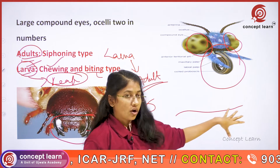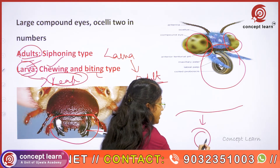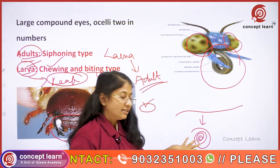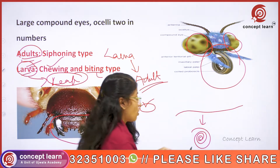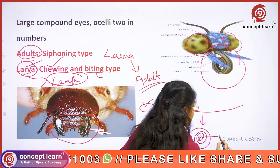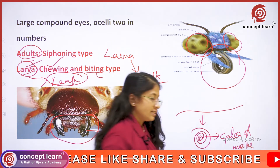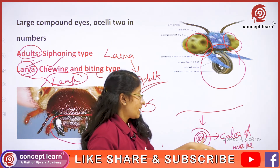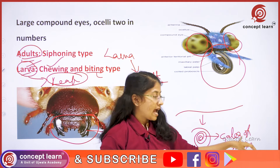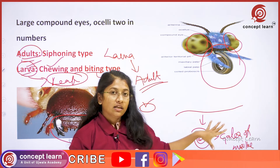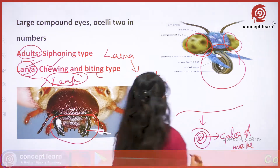The mouthpart present in adults is the long coiled proboscis. It is usually coiled when not in use. This proboscis is a modification of the galea of the maxillae — one of the mouthparts found in insects — and this is an important characteristic of the adult Lepidoptera.